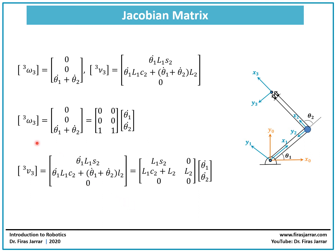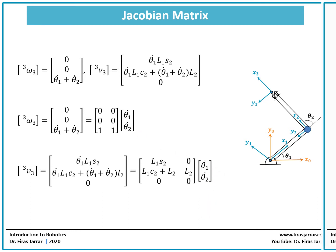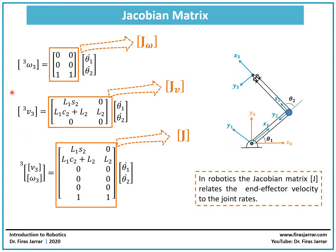Now we have the angular velocity and the linear velocity of the end effector expressed explicitly as a multiplication of two matrices, one of which contains theta 1 dot and theta 2 dot. We can combine these two equations into one matrix equation. On the left side we have the velocity of the end effector with both the linear component and the angular component — a column matrix that contains the linear velocity, which is a 3x1 matrix containing x dot, y dot, and z dot of the end effector expressed in frame 3.